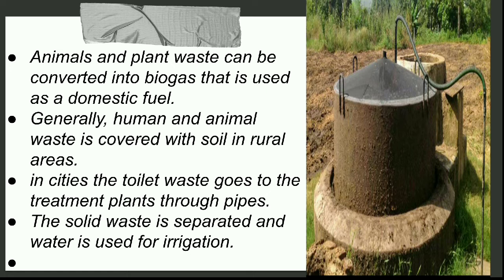At treatment plants, the waste is processed. The solid waste is converted to manure, and the liquid is separated. This treated water is used for garden irrigation in many places. If you go to a city area, note that irrigation or sprinkler water is not drinkable — it is treated liquid waste from sewage, kept separate and used to maintain gardens.